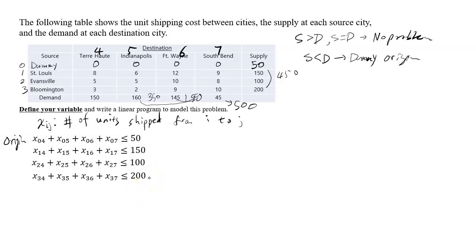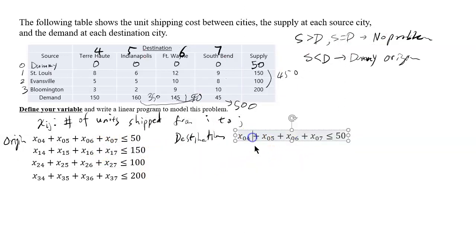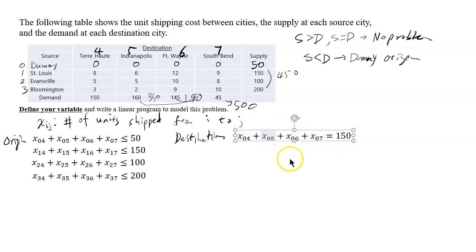Now for the destination, the destination requires all the incoming units — everything shipped to that destination — to equal its demand. You don't want less than the demand or more than the demand; it has to be equal to demand. So from dummy to Terre Haute is X04, then X14, X24, X34, and that has to add up to 150.